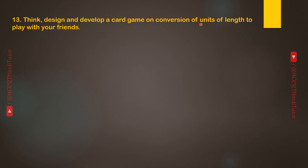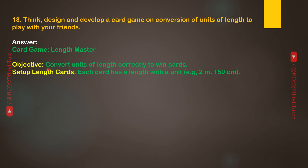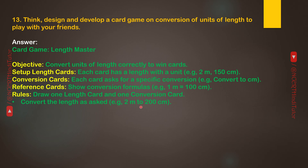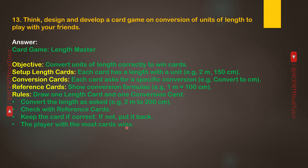Question 13: Think, design and develop a card game on conversion of units of length to play with your friends. Answer — Card Game: Length Master. Objective: convert units of length correctly to win cards. Setup: Length cards each have a length with a unit (e.g., 2m, 150cm). Conversion cards ask for a specific conversion (e.g., convert to centimeters). Reference cards show conversion formulas (e.g., 1 meter = 100 cm). Rules: draw one length card and one conversion card, convert as asked (e.g., 2m to 200cm), check with reference cards, keep the card if correct, otherwise put it back. The player with the most cards wins.